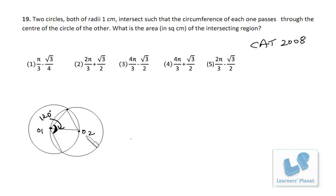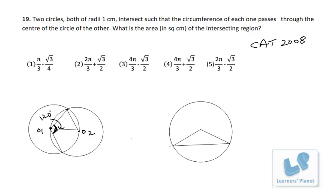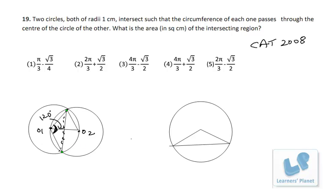Once you know this angle, the problem becomes straightforward — it's a tenth-grade level problem. I redraw the diagram for better clarity. The intersecting region is symmetric, so if we find the area of one half segment and double it, we get the total area of the intersecting region.